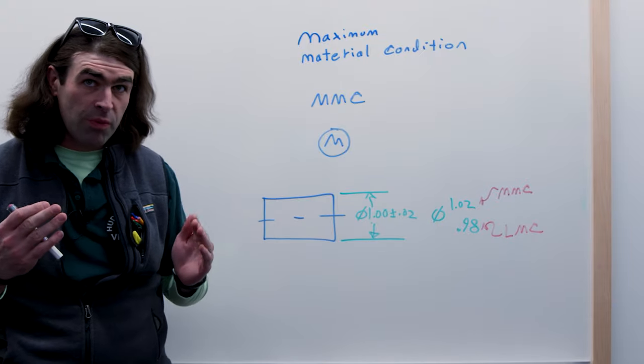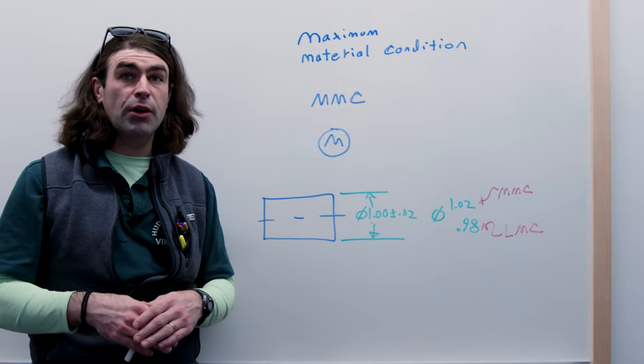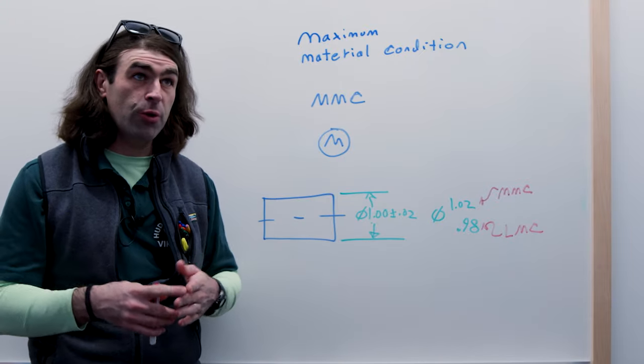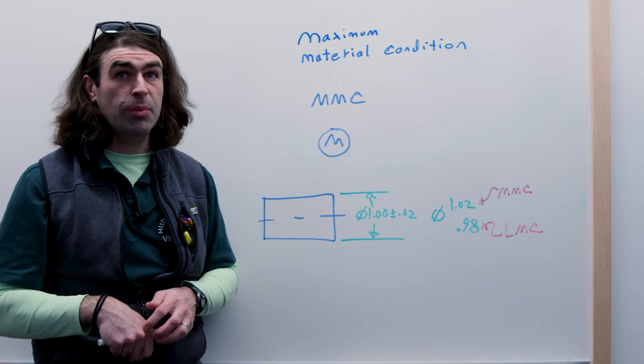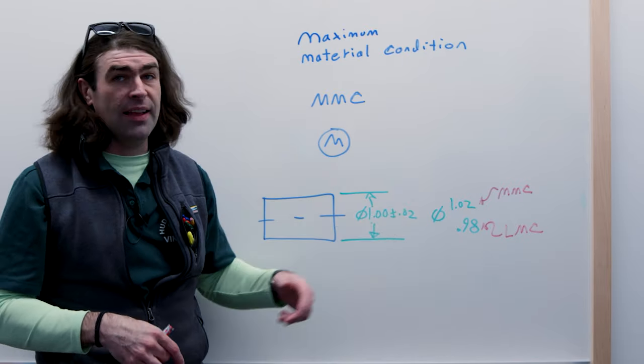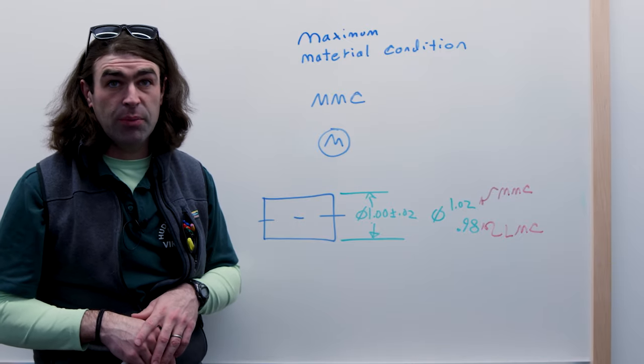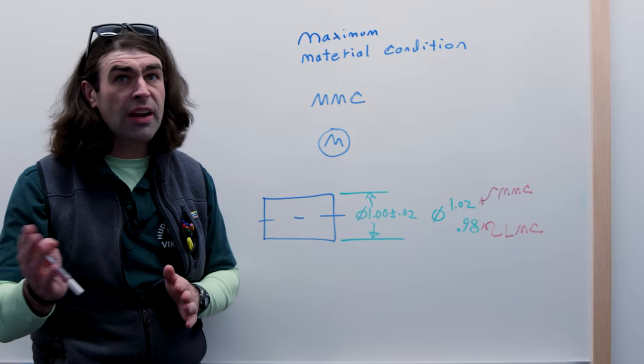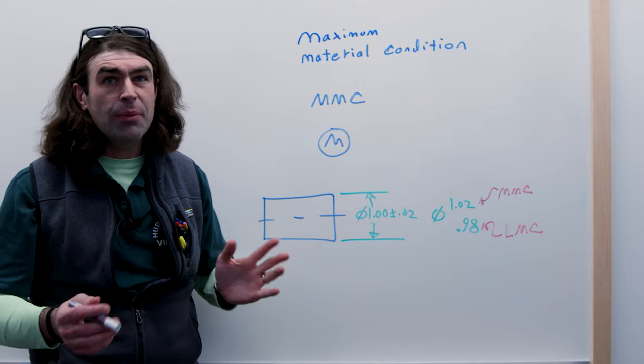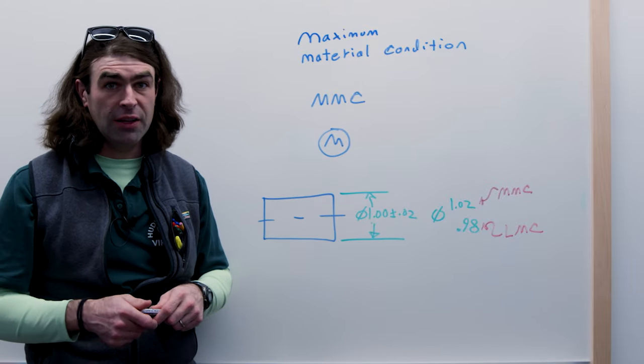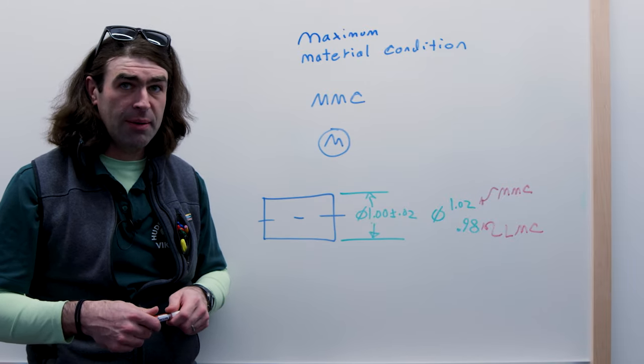Here's a very common use case for the abbreviation. Maybe we're making some notes, trying to do some hand calculations or something. I might put that's the MMC and that's the LMC. Instead of writing it out, I could use the symbol. I'd say typically we'll save the symbol for being used in the feature control frame.